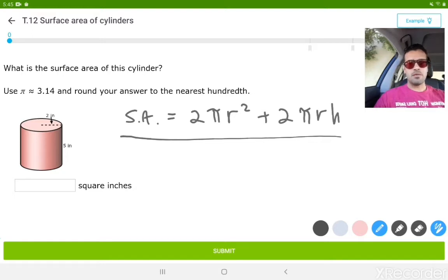Pi, we're going to substitute with 3.14 according to our problem here. And r stands for the radius, which is the distance from the outer edge of a circle to the center point. And h stands for the height.